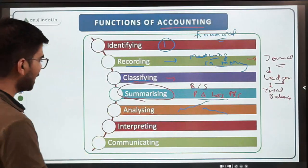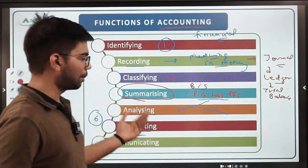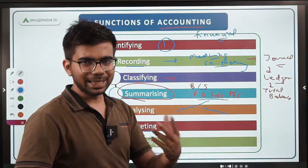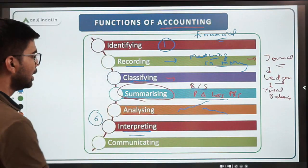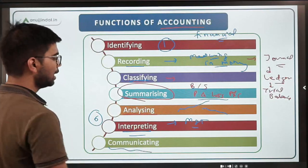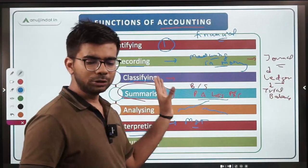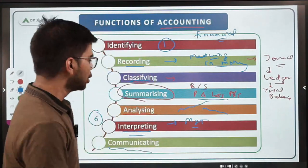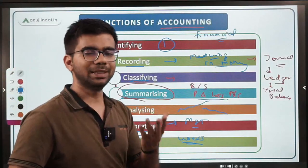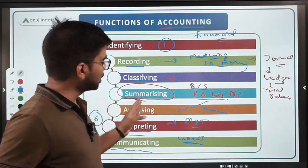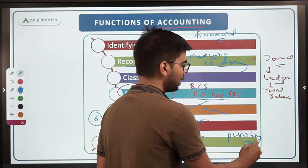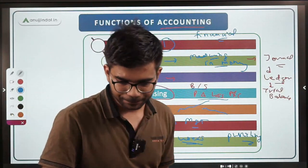After analysis comes interpretation — based on our analysis, what corrective action should we take in the future? This is useful for management and other stakeholders. Finally, we communicate: whatever analysis and summaries we have prepared, we communicate them to interested users. There are various users of accounting information — management, employees, investors, government (for tax purposes). We communicate to all these users by publishing financial statements in national newspapers.